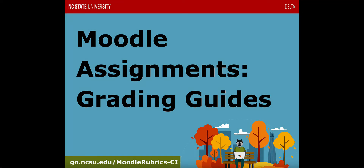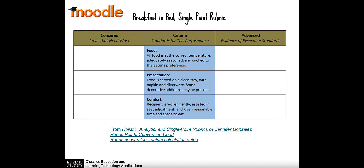In this video we're going to talk about grading guides in Moodle — specifically this is an advanced type of grading that you can do with different assignments or forums in Moodle. To set this up we're going to imagine that we've given students an assignment in which they have to create breakfast in bed, and we have three categories we're going to be evaluating them on: food, presentation, and comfort.